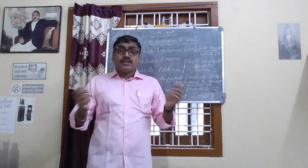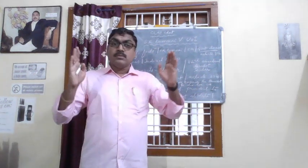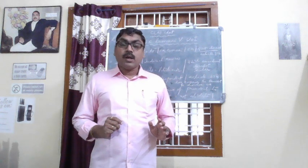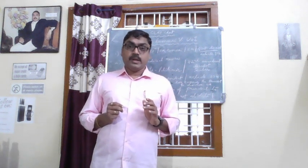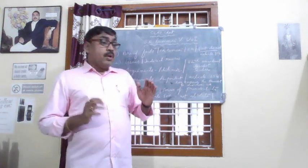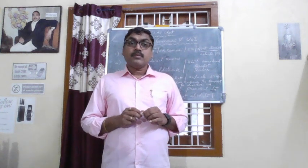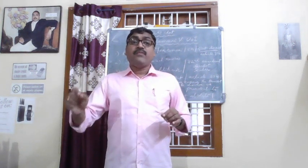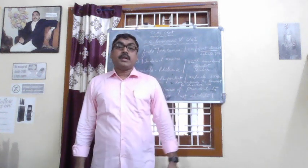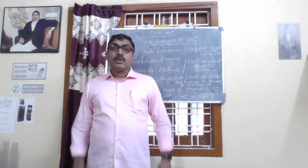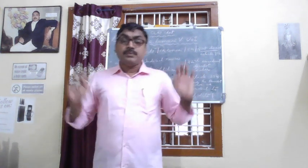The brief facts of the case are: SR Bombay was the Chief Minister of Karnataka at that time, in the year 1988. His government was dismissed by the President of India by imposing President's Rule in Karnataka under Article 356, based on the recommendation of the then Governor of the State of Karnataka. The proclamation was declared in the state of Karnataka.